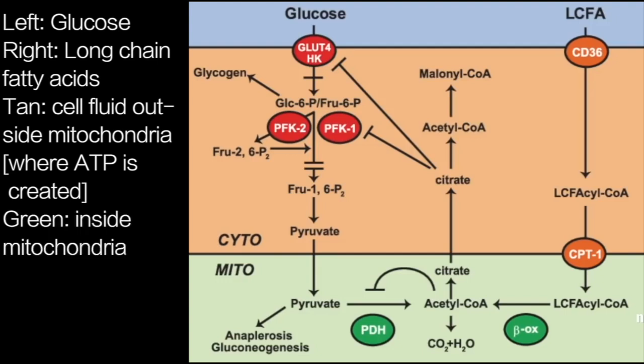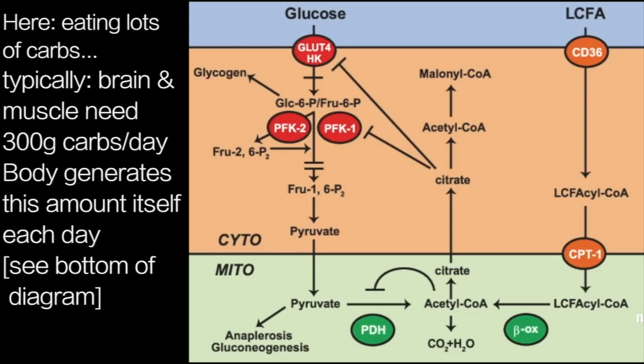The green area is inside the mitochondria — the workings inside where all that energy, all that ATP, is created. This is the situation where a person has been consuming a diet rich in carbohydrates.